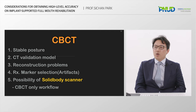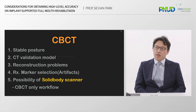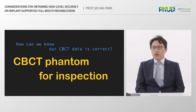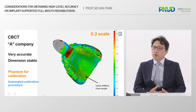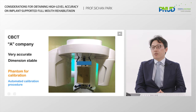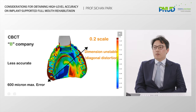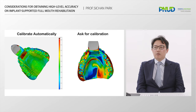For edentulous patients, CBCT scan is very important because we can make a surgical guide from two CBCT scans — one from the patient scan with a denture, and a scan of the denture itself. However, CBCT is not always accurate. To inspect it, we should translate DICOM files to STL files and then compare them. For example, one CBCT from a company shows accurate results with its own calibration phantom and can automatically calibrate itself, while another shows less accurate results. Recently, most CBCTs have improved, with errors under 500 microns. Please check your CBCT before making a surgical guide plan.